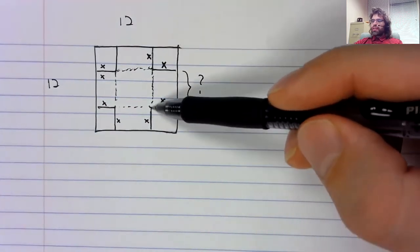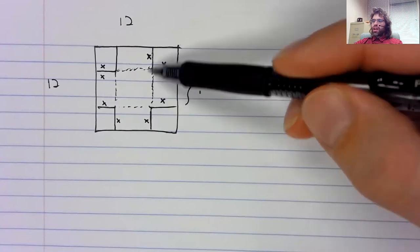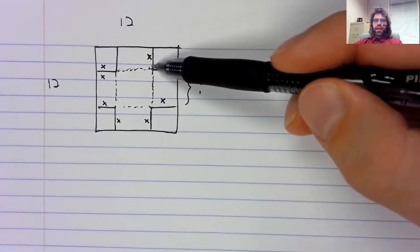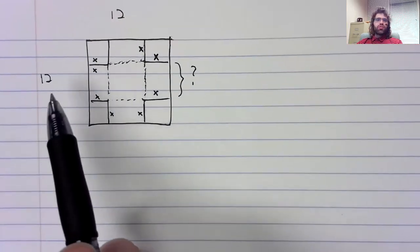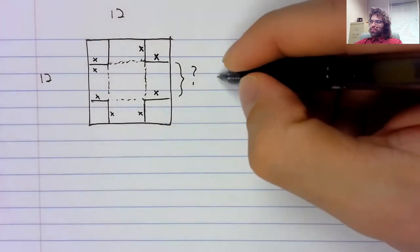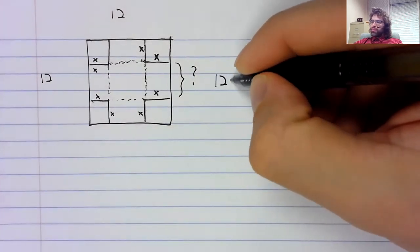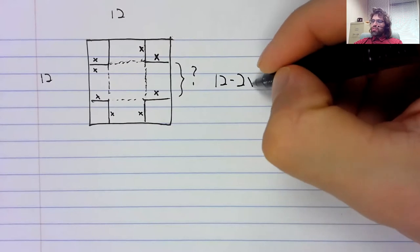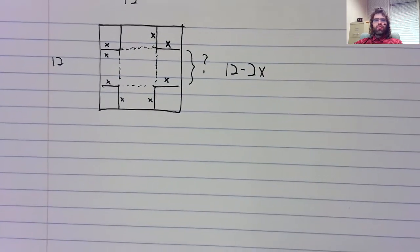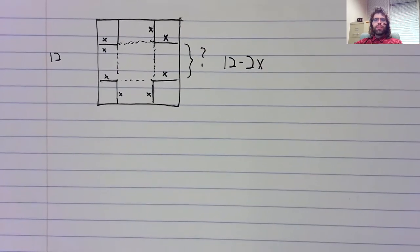Well, x plus this side plus x is 12. So this side is 12 minus 2x.